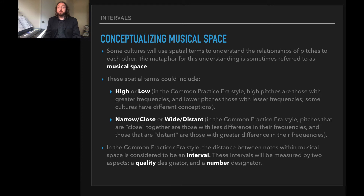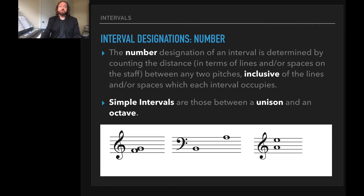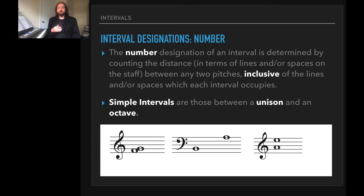These intervals would be measured by two aspects: a quality and a number designator, and we'll be talking about how to find each of those. So let's talk first about number designations. The number designation of an interval is determined by counting the distance in terms of lines and/or spaces on the staff between any two pitches.